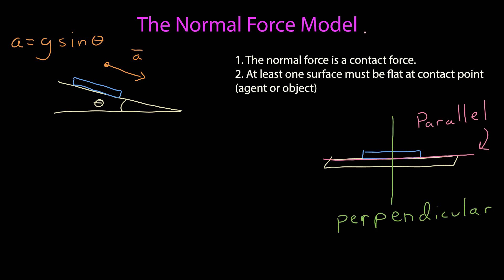The first step is to identify the planes that are parallel and perpendicular to the surface at that contact point. This is the contact surface here. The pink line is parallel to that surface, and the green line is perpendicular, set at 90 degrees.